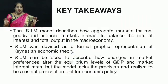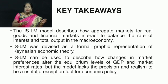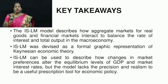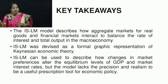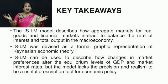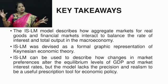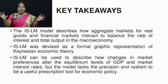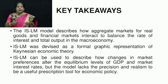As a key takeaway, the IS-LM model describes how the aggregate market for real goods (IS) and the financial market (LM) interact to balance the rate of interest and total output in macroeconomics. On the whole, the IS-LM model tells you about interactions between the goods market and the financial market, how they can be altered and brought into equilibrium, so that you can balance the rate of interest and total output in macroeconomics.